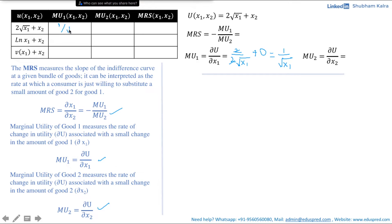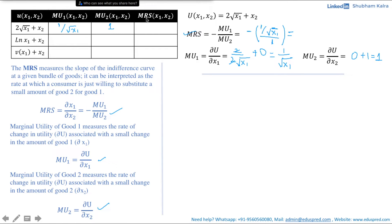Now let's calculate MU2 by partially differentiating the utility function with respect to x2, keeping x1 constant. Since x1 is constant, the 2√x1 term contributes 0, and the derivative of x2 is 1. So MU2 = 1. Substituting into the MRS formula: MRS = −(1/√x1)/1 = −1/√x1.